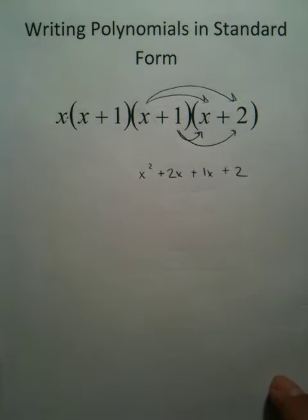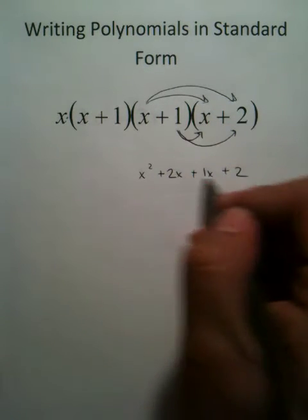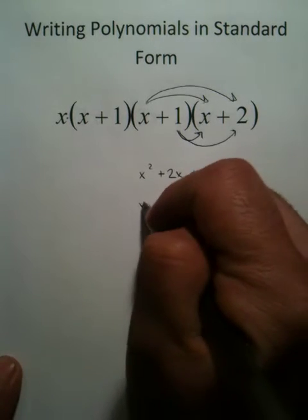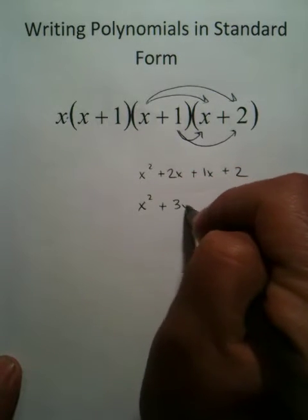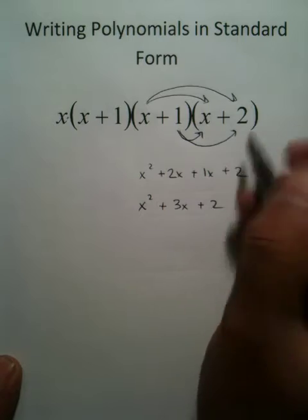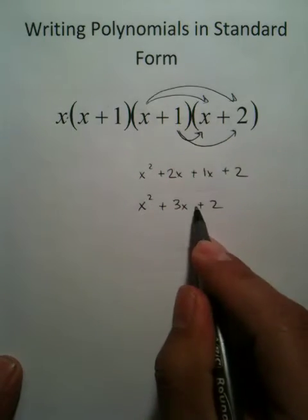Teachers call this FOIL. This is the distributive property. However you're comfortable with it, just make sure that you simplify your answer. x squared plus 3x plus 2 is what these two binomials turned into.